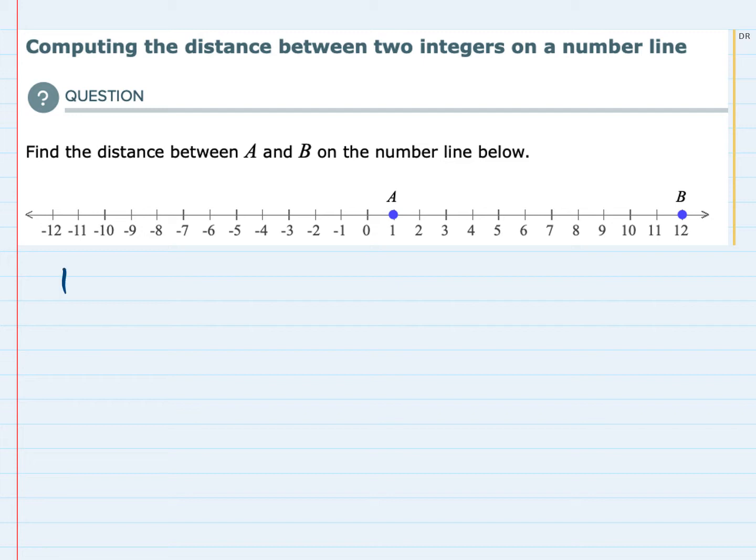And to compute that distance, we can use a formula that says the distance is equal to the right-hand value minus the left-hand value. So we're going to take the largest value and subtract the smaller value. And the way these values are written,